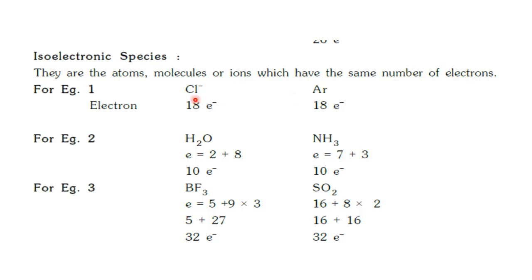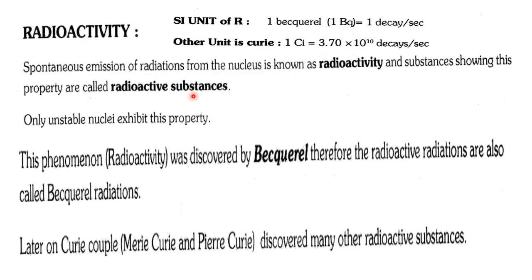Isoelectronic species are atoms, molecules, or ions which have the same number of electrons. For example, chlorine has atomic number 17, so 17 electrons. But Cl⁻ has 18 electrons, and argon also has 18 electrons. So Cl⁻ and argon are isoelectronic species — they have the same number of electrons.